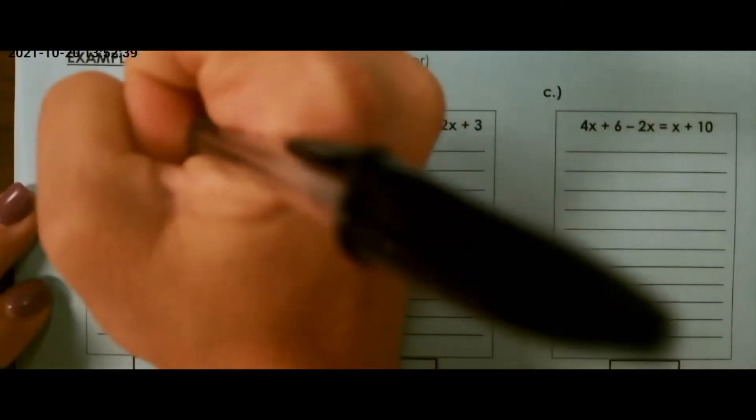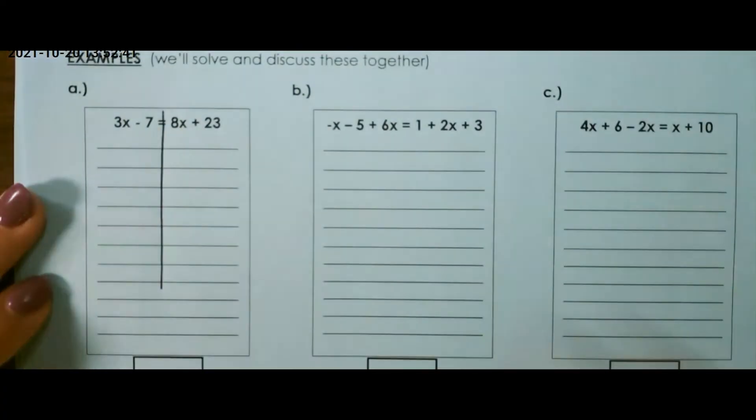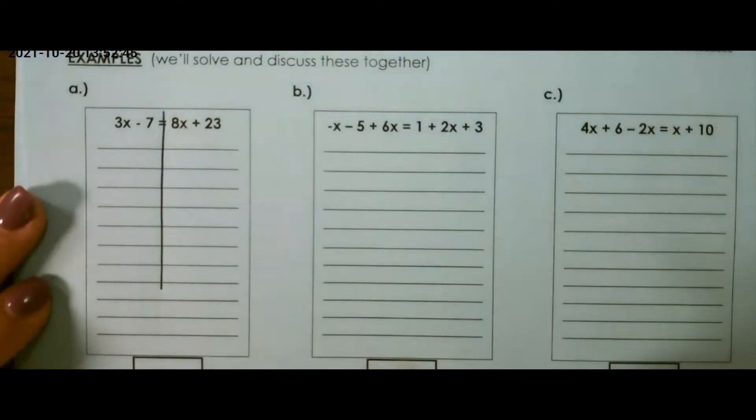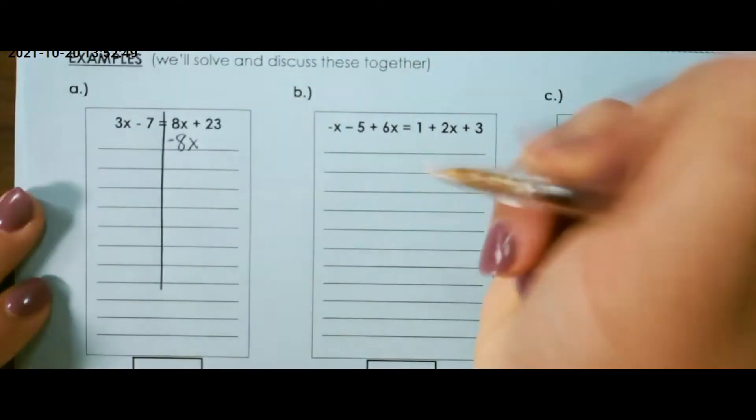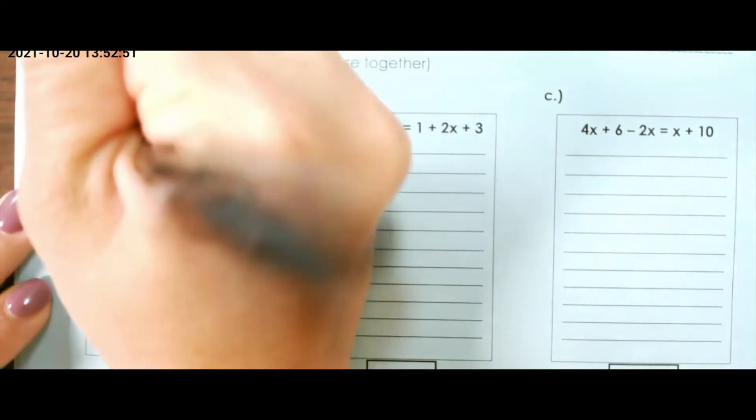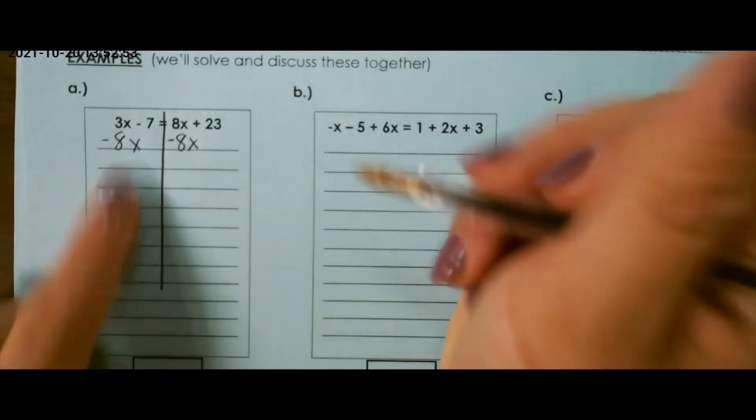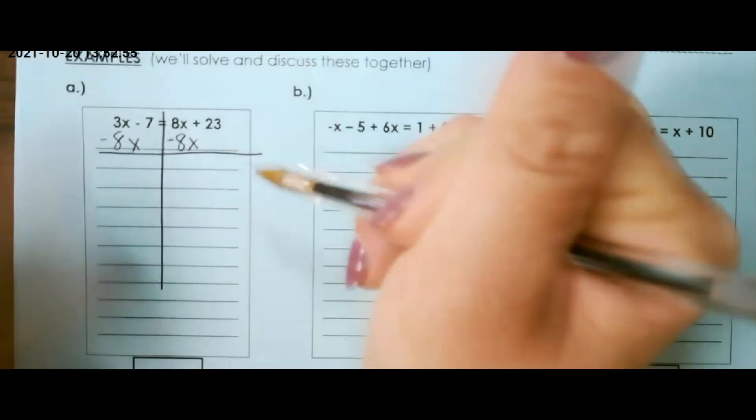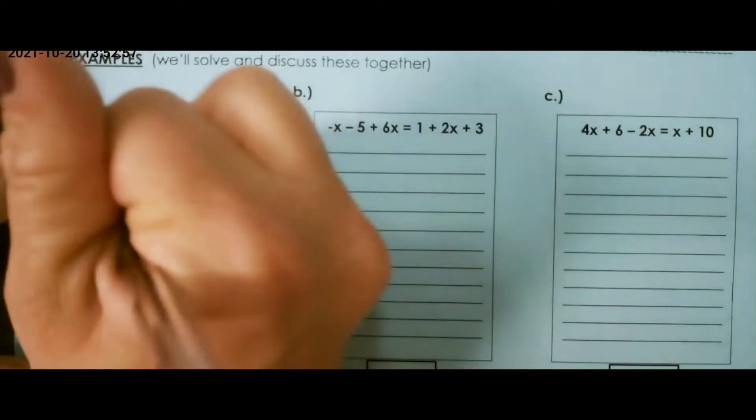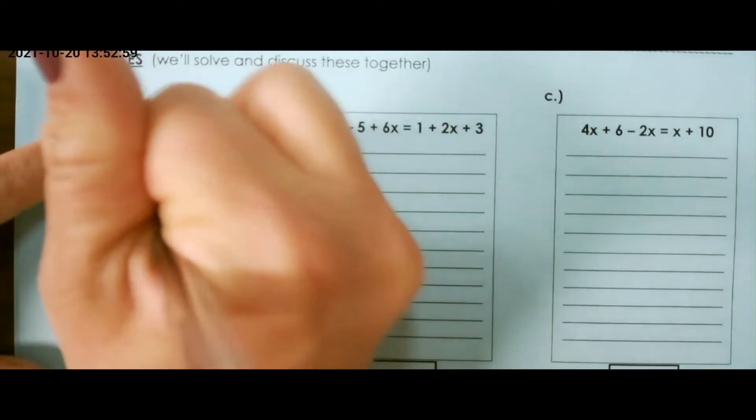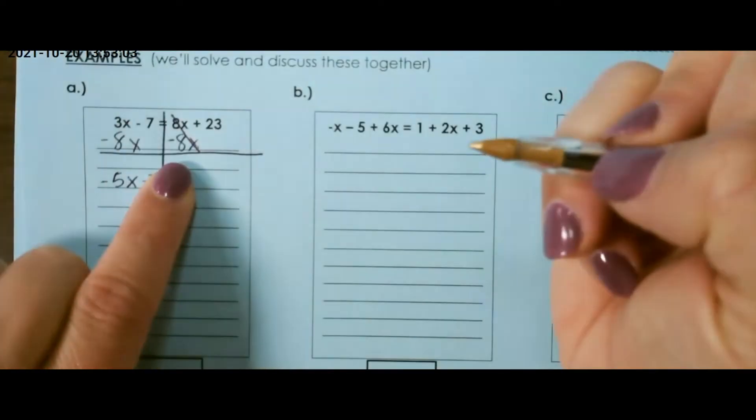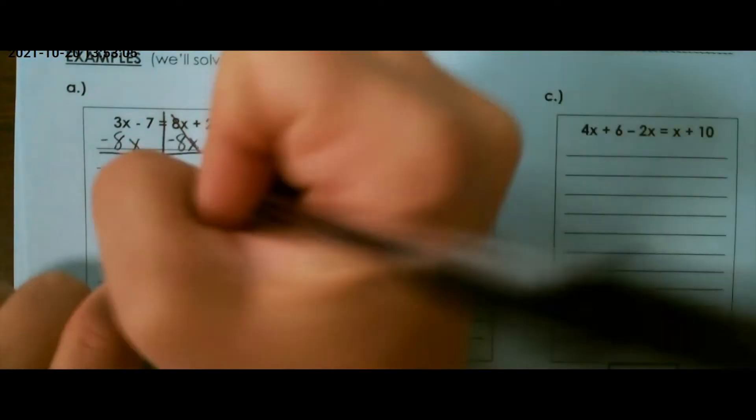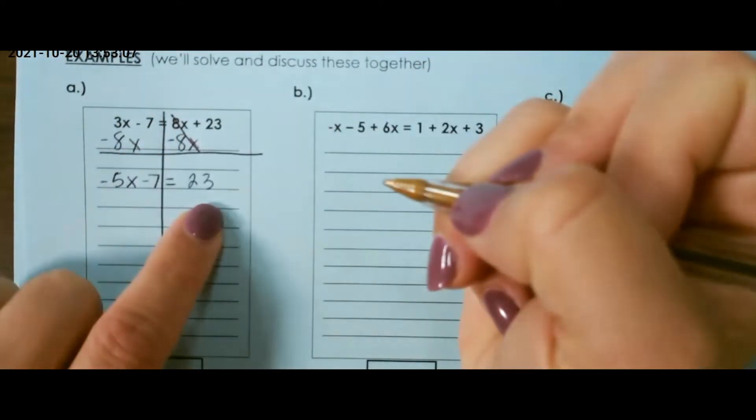So our first example, I always like to draw a line through the equal sign to create two sides. I want to get all of my variables to one side, so I'm going to take 8x and subtract it from both sides to get it onto the left side. So, 3x minus 8x is negative 5x minus 7 equals 8x and negative 8x cancels, so that leaves me with 23 on the right.